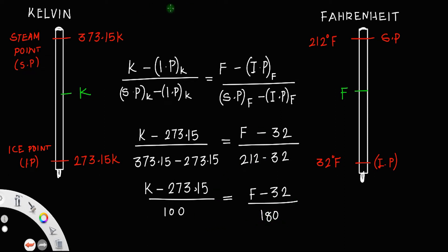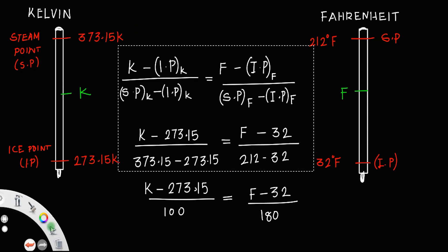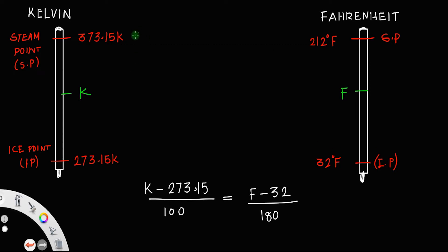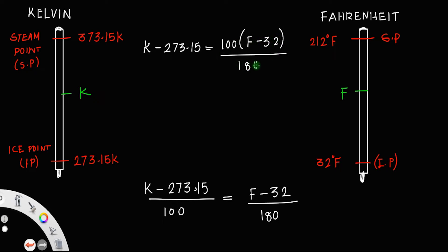We can simplify this: K minus 273.15 equals, taking the 100 to the right, 100 times (F minus 32) divided by 180. Cancelling the zeros, K minus 273.15 equals 5/9 times (F minus 32).